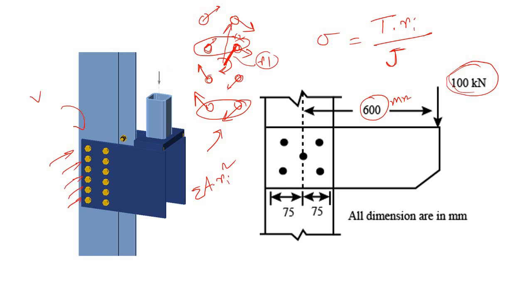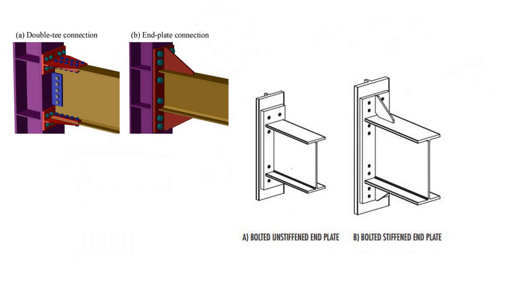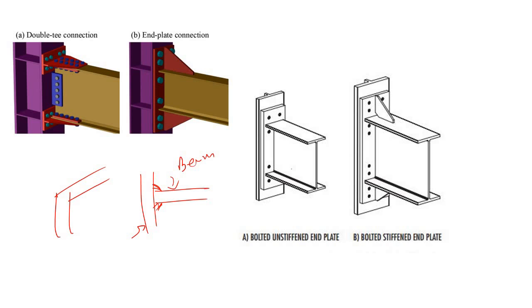Now let's look at a moment connection. Consider a pipe rack connection where a beam connects to a column. The beam is connected to the column flange, and a moment is applied at this joint.